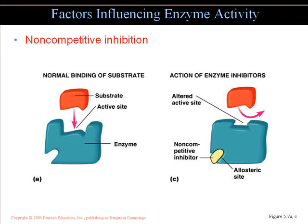Non-competitive inhibition occurs when a substance binds to a different area of the enzyme — not the active site. When this non-competitive inhibitor binds, it changes the shape of the enzyme, thus changing the shape of the active site. The substrate can no longer fit into the active site — like a puzzle piece that no longer fits — and thus this affects the enzymatic activity in that particular reaction.